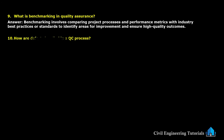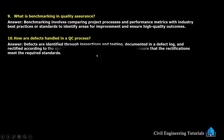Next: how are defects handled in a quality control process? Defects are identified through inspections and testing, documented in a defect log, and rectified according to the specified procedures. Follow-up inspections ensure that the rectifications meet the required standards.